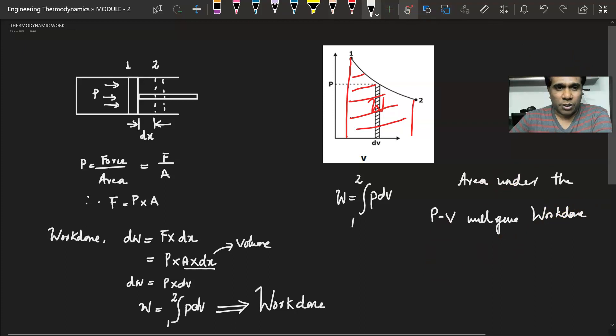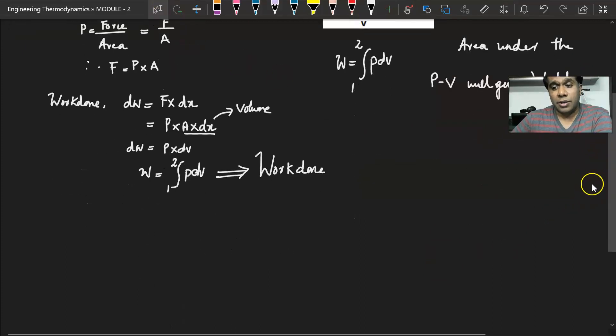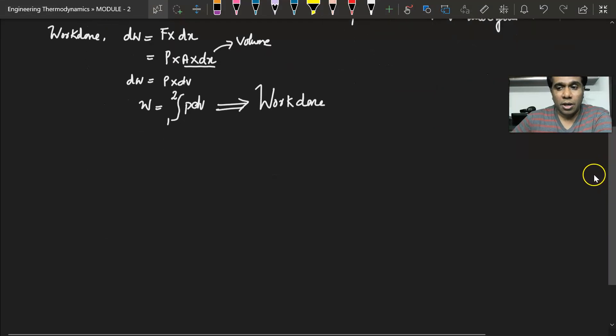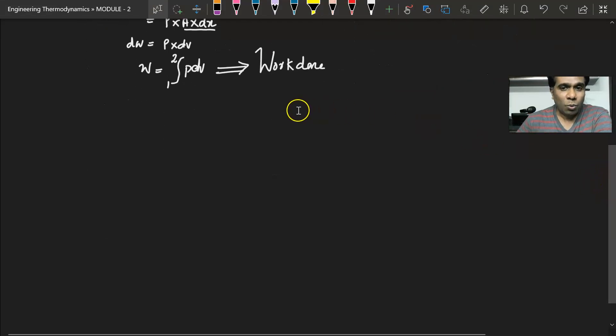Now from this I can prove that work is a path function, not a point function. Now what do you mean by a path function? For example, I am drawing a PV diagram.